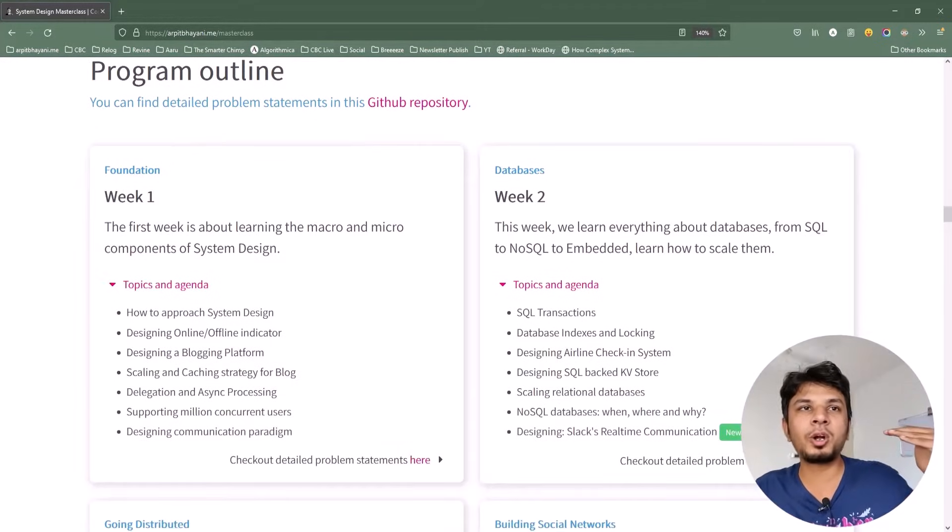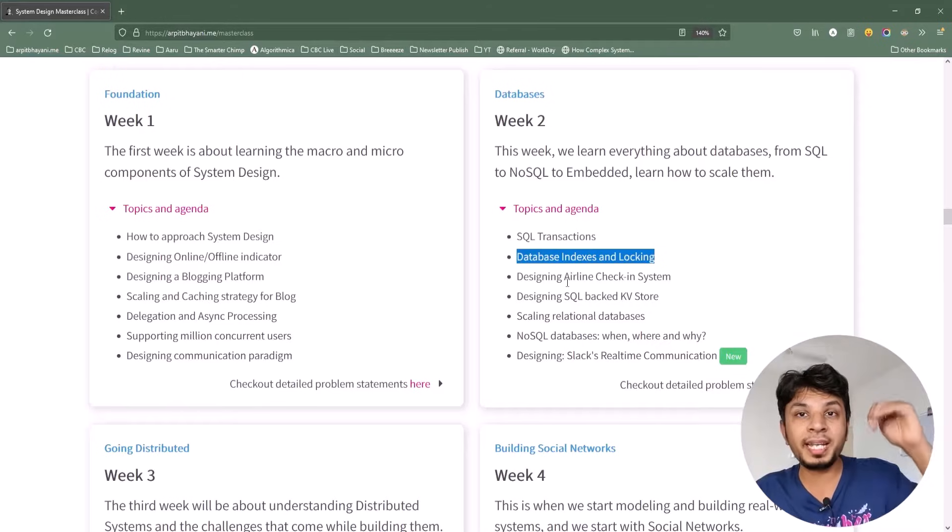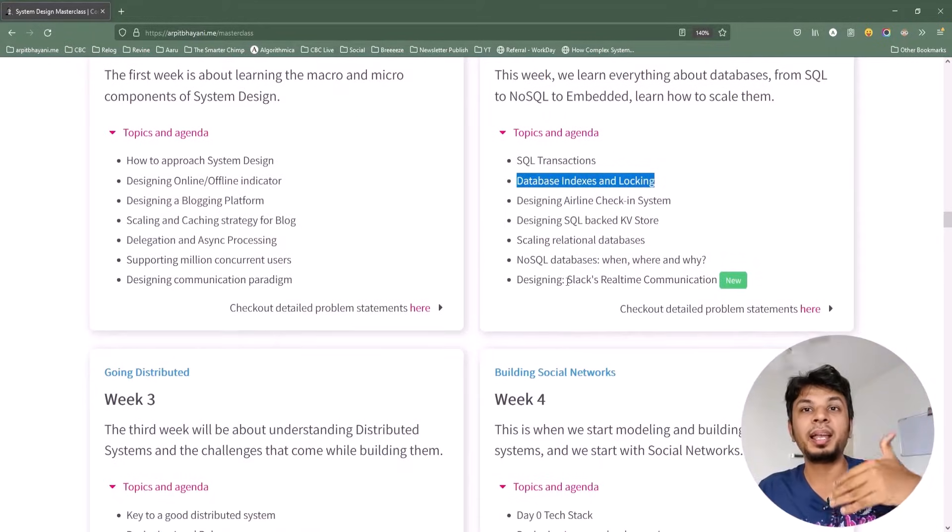We start with week one around the core foundation of the course where we design online offline indicator, then we try to design our own medium, then we go into database where we go in depth of database locking and see a few very amazing examples of database locking in action and how do we ensure that our system scales through that.